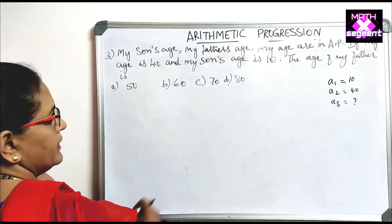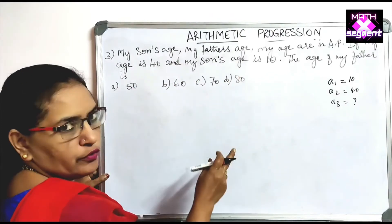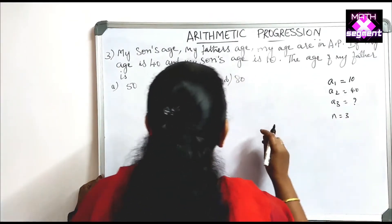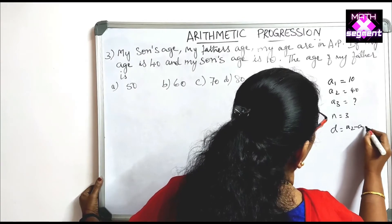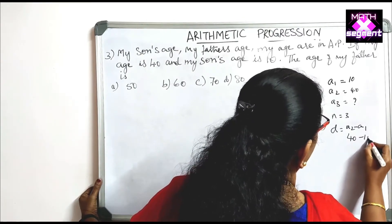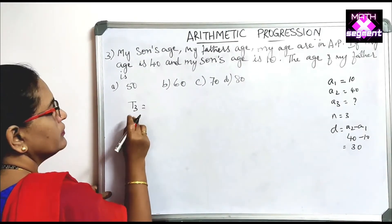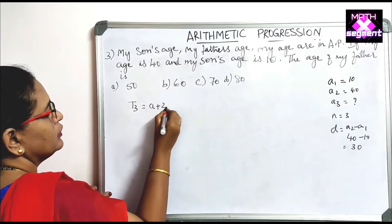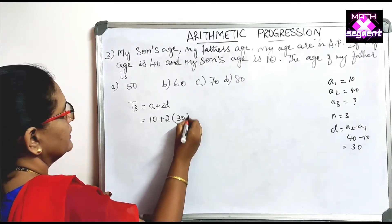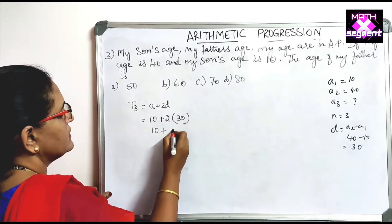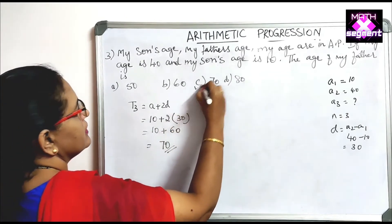Since there are 3 terms, N is 3. The common difference D is A2 minus A1, which is 40 minus 10, giving D equals 30. To find the third term, we use A plus 2D: that is 10 plus 2 times 30, which is 10 plus 60, giving 70. So the father's age is 70, and option C is correct.